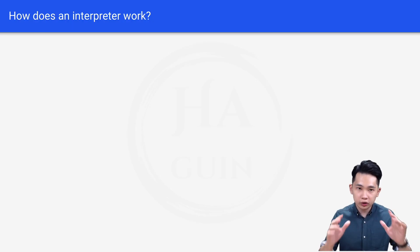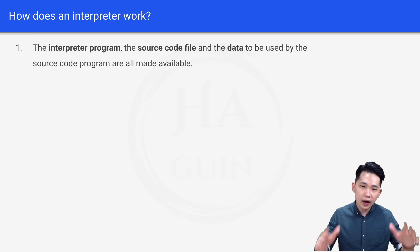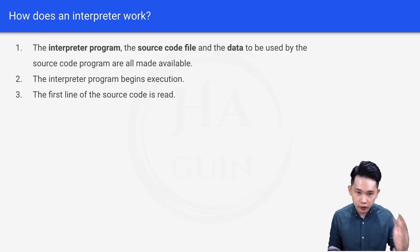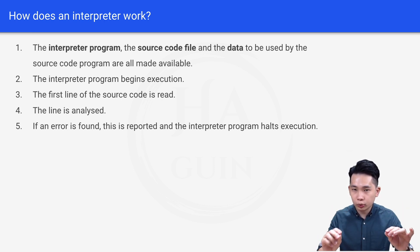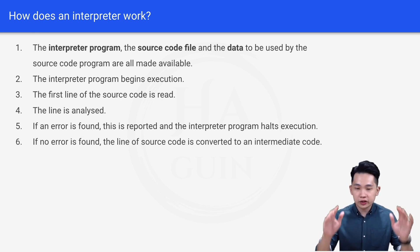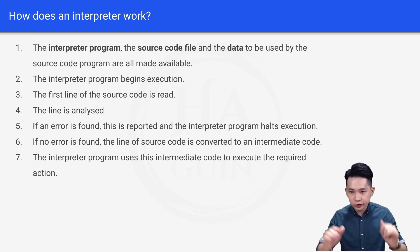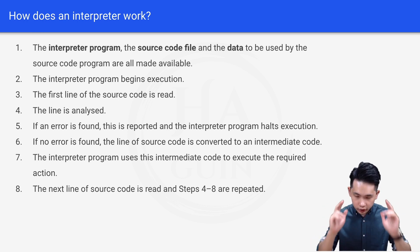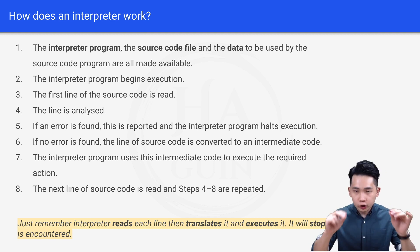Now let's look at how an interpreter works. The interpreter program, the source code file, and the data to be used are all made available, then the interpreter begins execution. The first line of source code is read and analyzed. If an error is found, it is reported and the interpreter halts execution — meaning it stops as soon as an error is encountered. If no error is found, the line is converted to intermediate code, and the interpreter executes the required action. Then the next line is read and the process repeats. In summary, the interpreter reads each line, translates it, and executes it, stopping when an error is encountered.